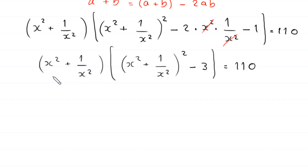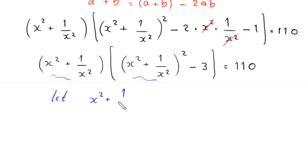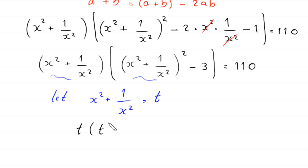We suppose that x² + 1/x² is equal to t. With this substitution, the equation becomes t times (t² − 3) is equal to 110.